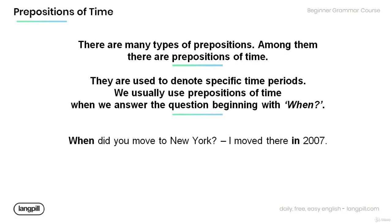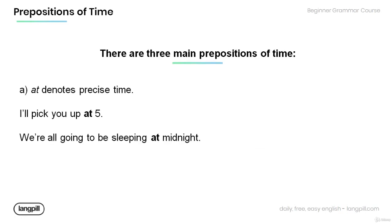There are many types of prepositions, and among them are prepositions of time. Note that these prepositions are used to denote specific time periods. We usually use prepositions of time when we answer the question beginning with 'when.' Have a look at the example: When did you move to New York? I moved there in 2007. Note that the preposition of time 'in' tells us when I moved to New York.